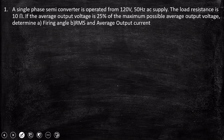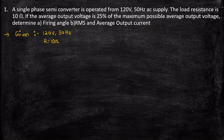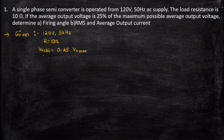Let's take a look at the first problem. The single-phase semi-converter is operated from a 120 volt, 50 hertz AC supply. The load resistance R is given as 10 ohms. If the average output voltage is 25 percent of the maximum possible average output voltage, determine the firing angle, RMS, and average output current. So the average output voltage is equal to 0.25 times the maximum average output voltage.